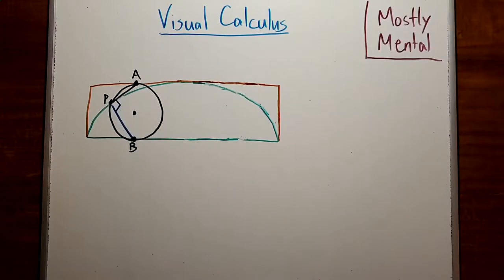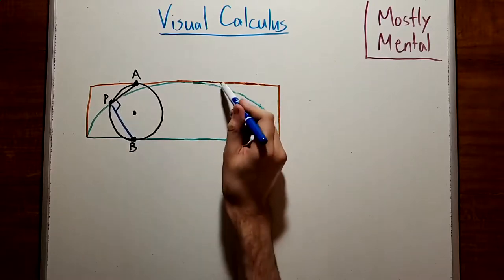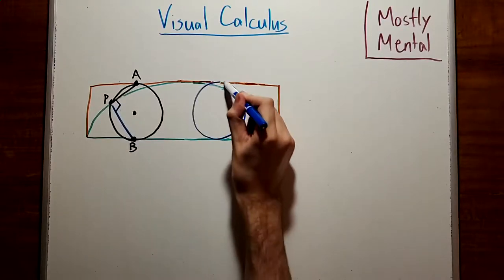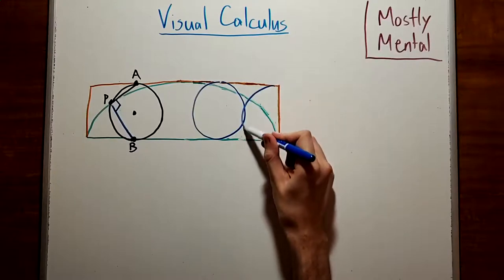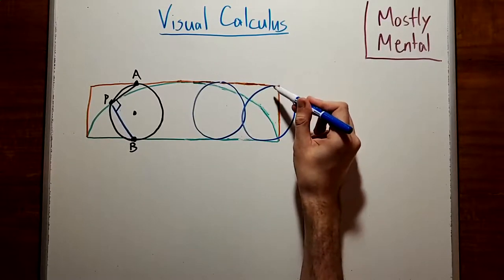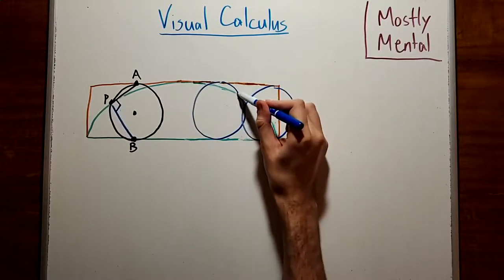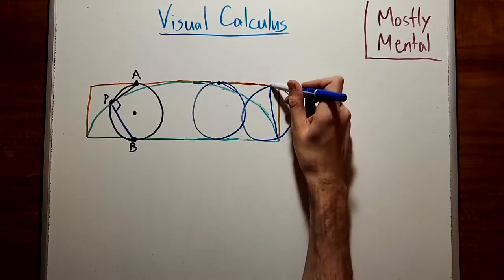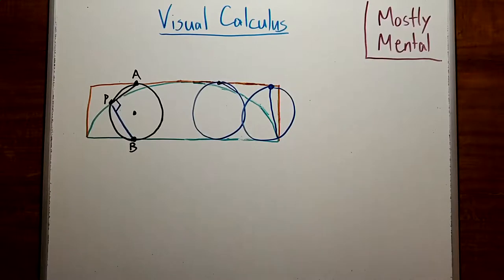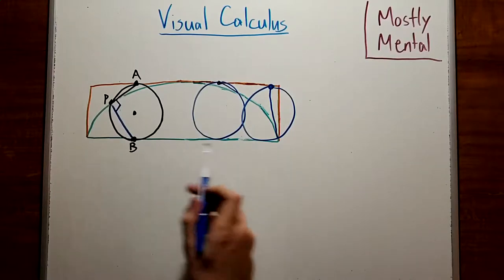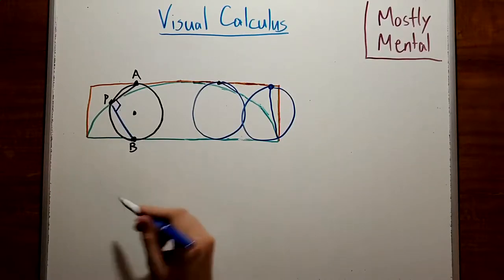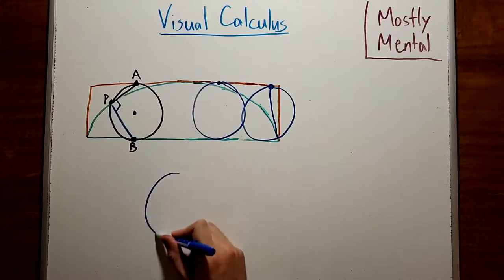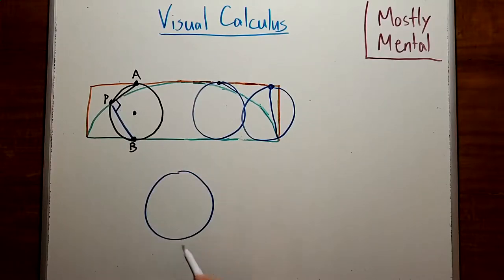By the same logic, that's true at every moment of the rotation. So whether the circle is here, or here, or here, the tangent at P passes through the top point of the circle. And this diagram is getting a little bit cluttered, so let's look at just the circle and the tangents down below.